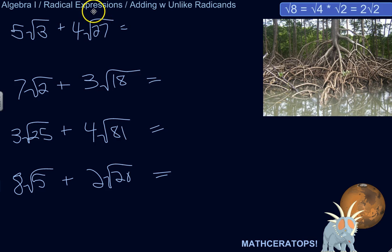And when you add radical expressions like this, they need to have the same radicand, and the radicand is the thing under the radical. So here I've got two radical expressions with unlike radicands. The radicand of this one is 3, this one is 27.